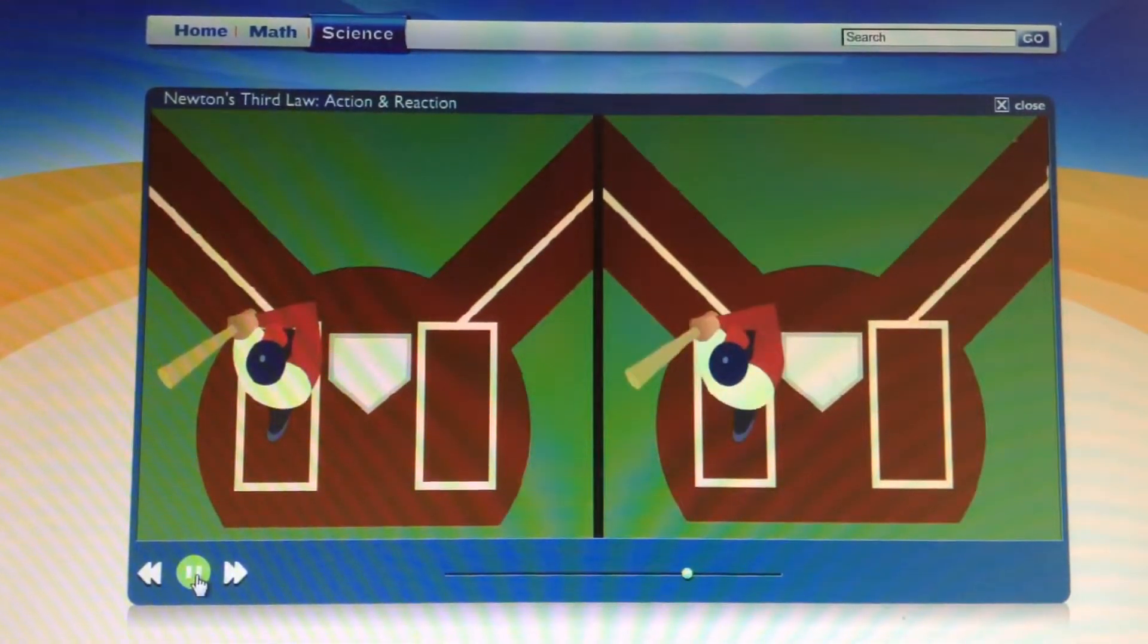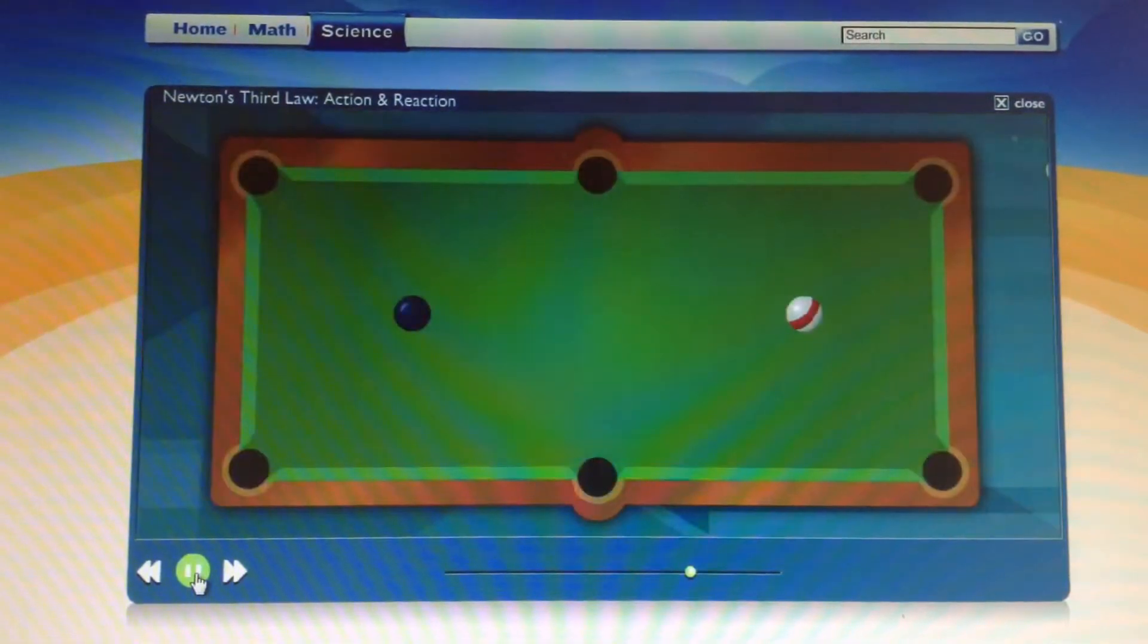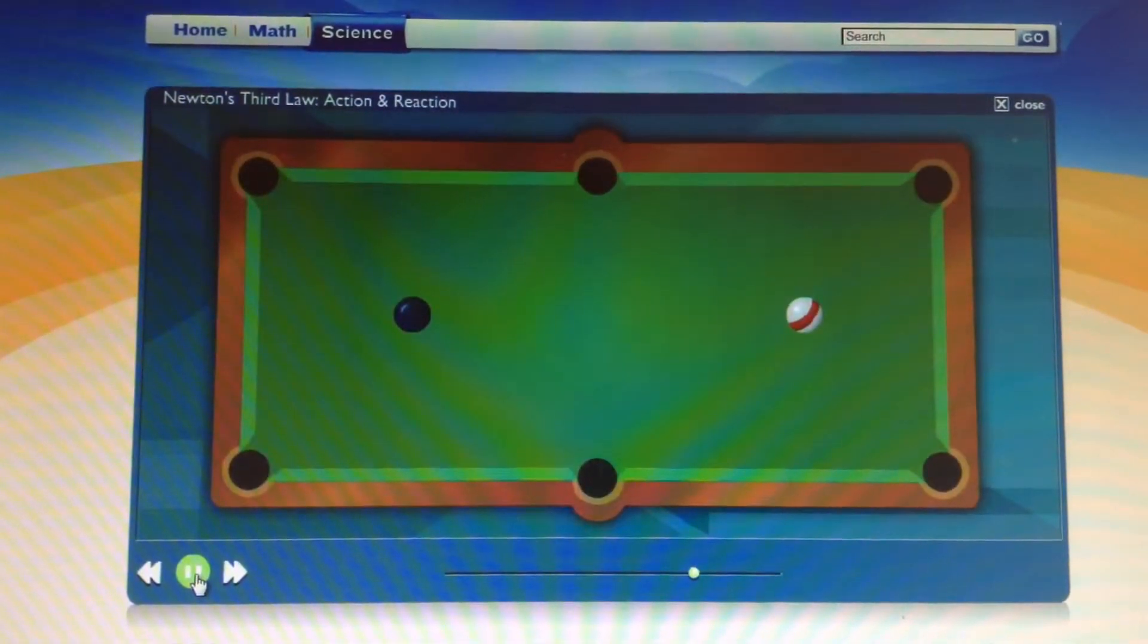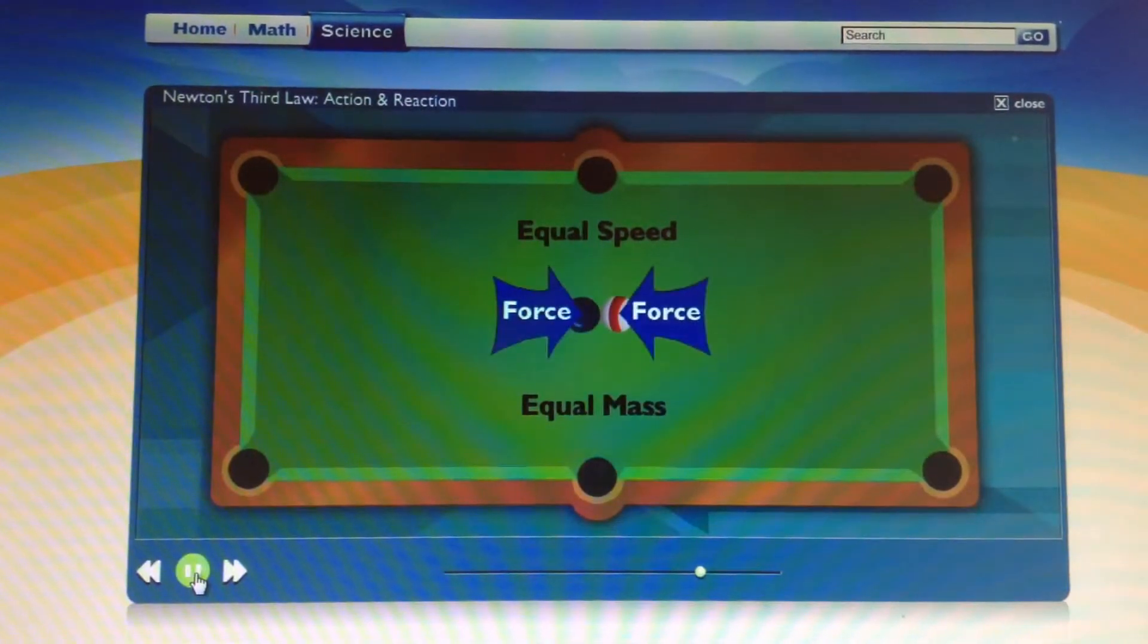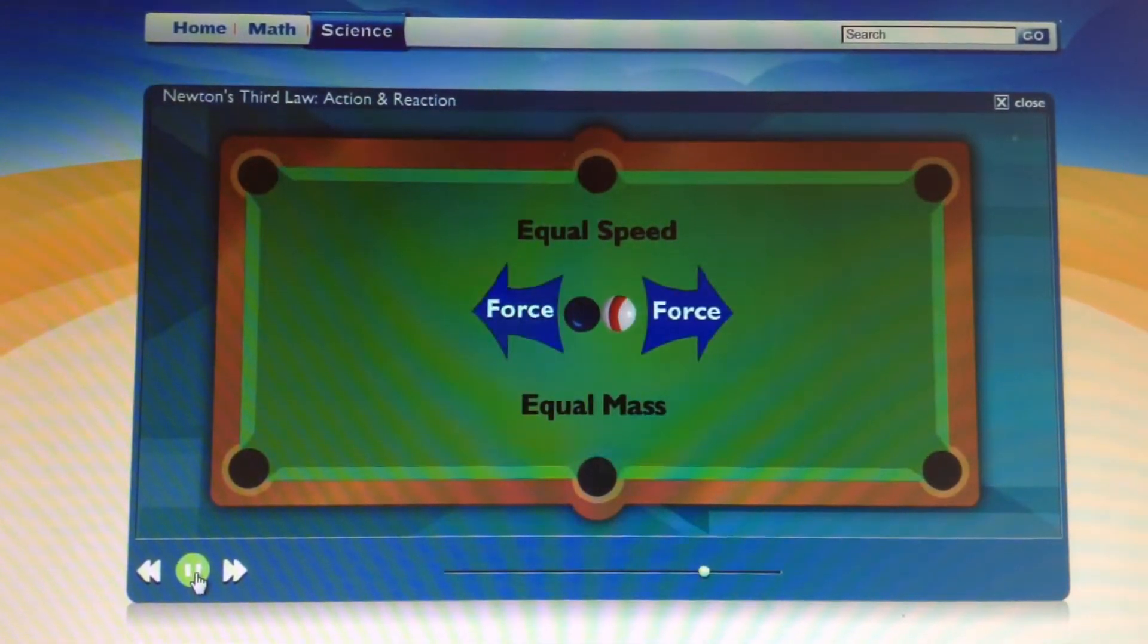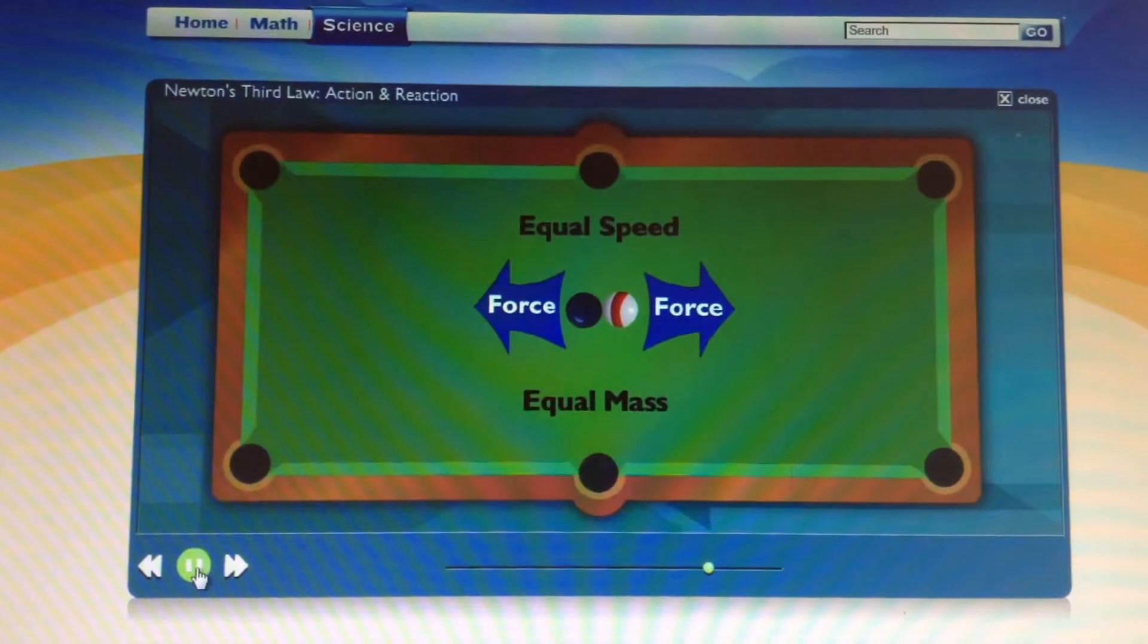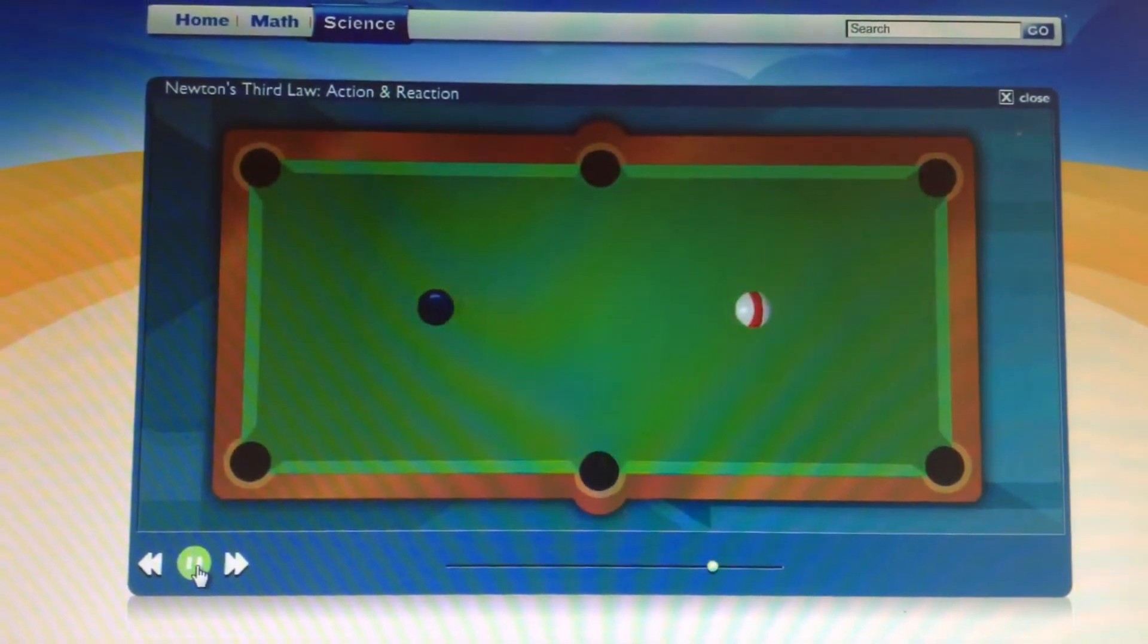And what happens when two things that are the same mass collide? Like two pool balls. Well, what do you think? Hmm. Well, they hit each other with the same force. And the forces press in different directions, so they have the same acceleration? Yeah.